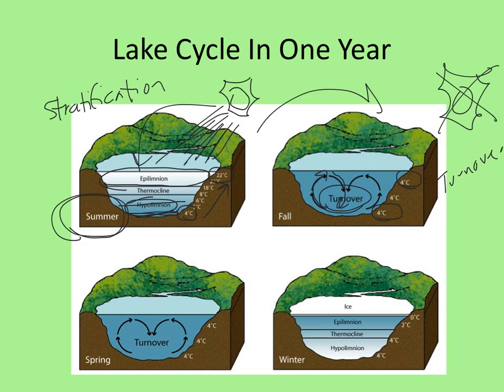Turnover is a good thing because all the oxygen in the system is getting redistributed, and all the nutrients in the lake are getting redistributed as the water cycles around. It could be bad if you've got pollutants — if pollutants are in the bottom of the lake they might get mixed up — but generally it's good to give the lake a little fresh bath. It's turning itself over.